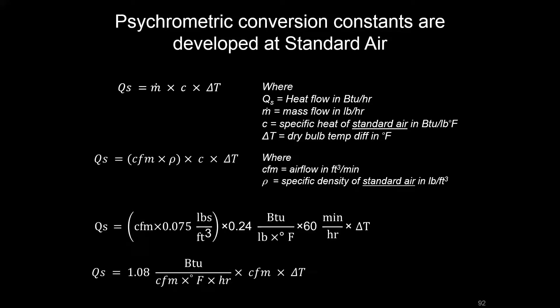When you plug numbers in there that we use for standard air, the 0.075 pounds per cubic feet for the specific density, and for the specific heat of standard air, we use 0.24 BTUs per pound per degree of that air. So when you plug all this in and calculate through, you get that 1.08 conversion constant that's really going to be ubiquitous throughout the psychrometrics field when you're trying to do these easy equations.